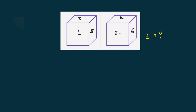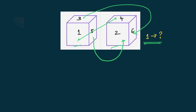Let's move to the next question. You have to find the opposite of one. You can observe that all numbers on both dice are different, so follow step three: first dice top is opposite to second dice right; first dice front is opposite to second dice top; first dice right is opposite to second dice front. From this condition, the opposite number of one is four.